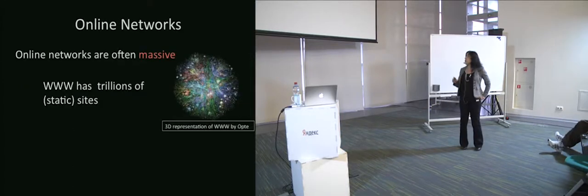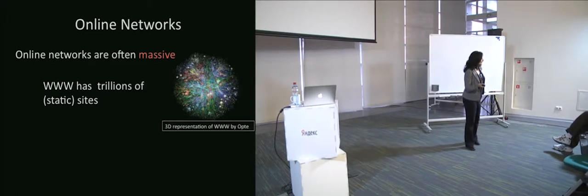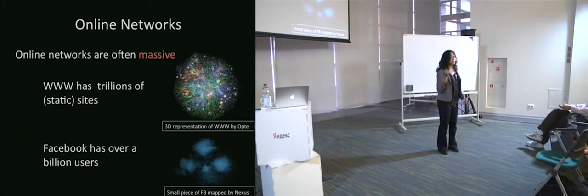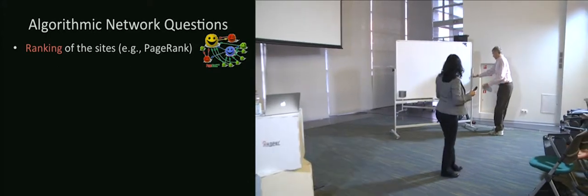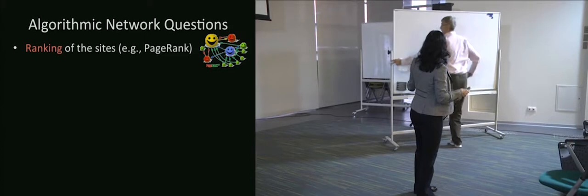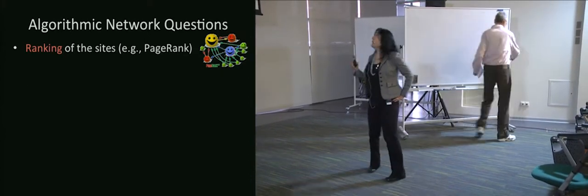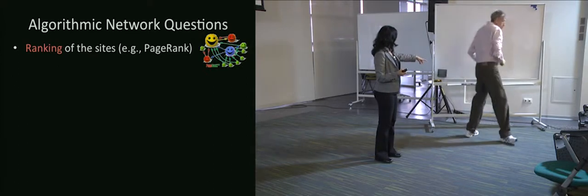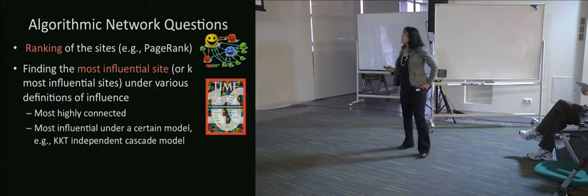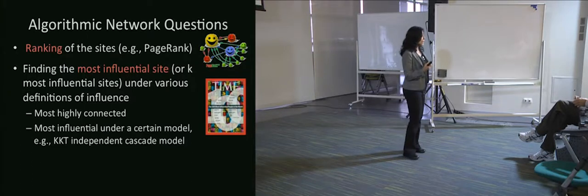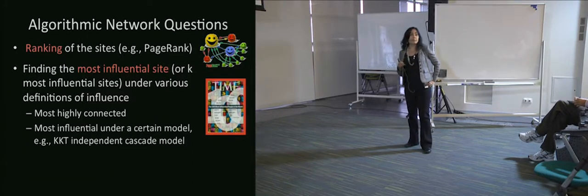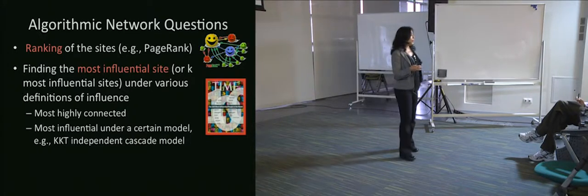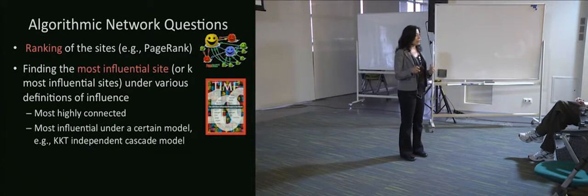Online networks are often quite large. The World Wide Web has trillions of static sites; Facebook has over a billion users. Some of the questions we'd like to look at are: how do we rank various sites relative to each other — things like PageRank? How do we find the most influential site or set of most influential sites under some definition, like the most highly connected, or the most influential under a certain model like the cascade model for viral marketing?